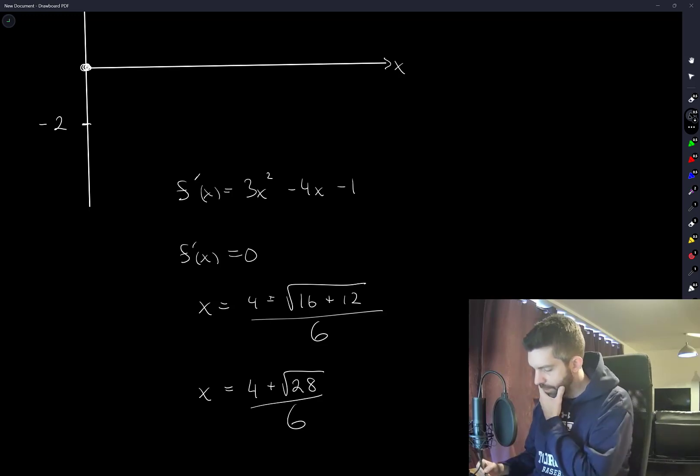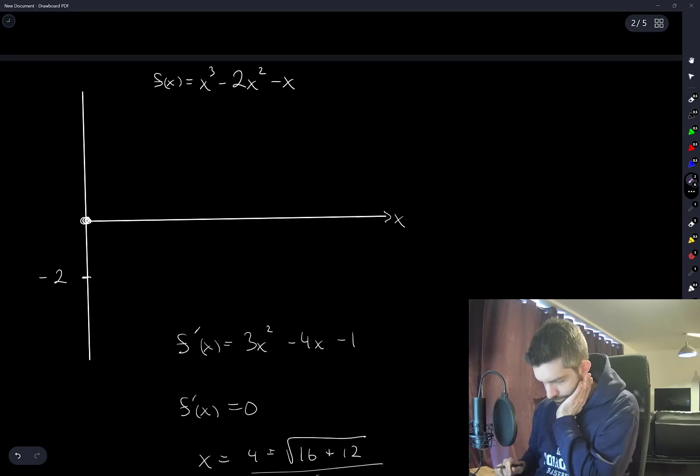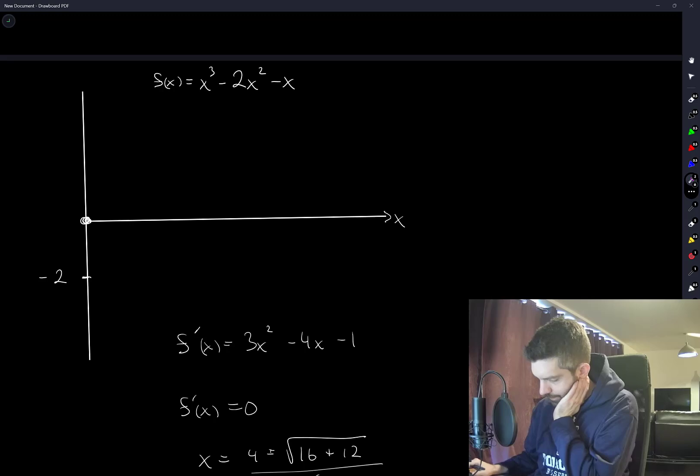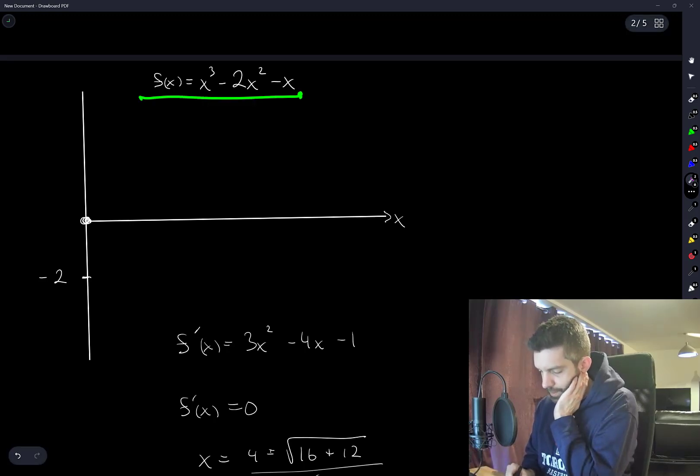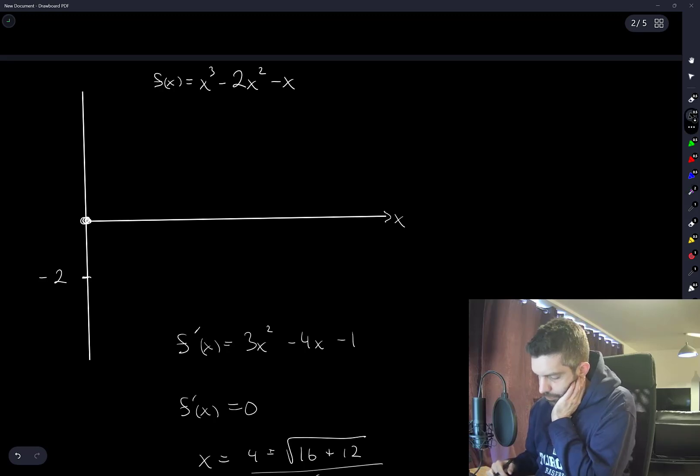Really what I want to do—wait, what I want is the minimum value of this. I want the minimum value of this function. Because if it's less than negative 2, then the answer is going to be there's two intercepts. If the minimum is equal to negative 2, then there's one intercept. Is this the easiest way to do it?